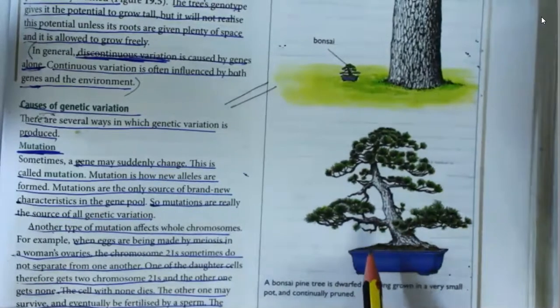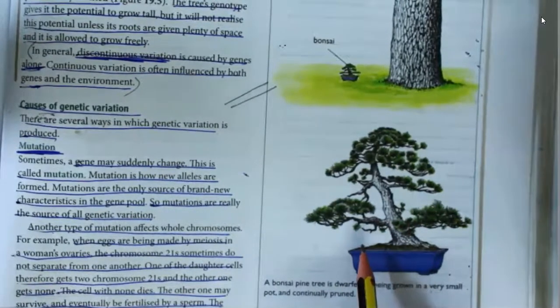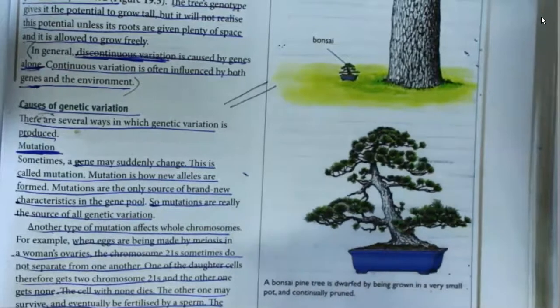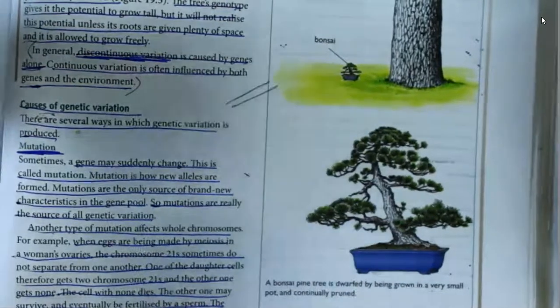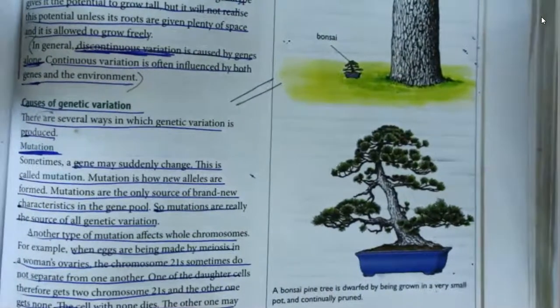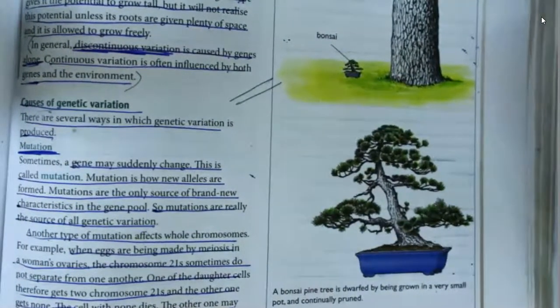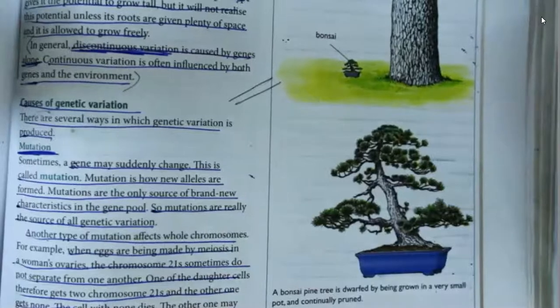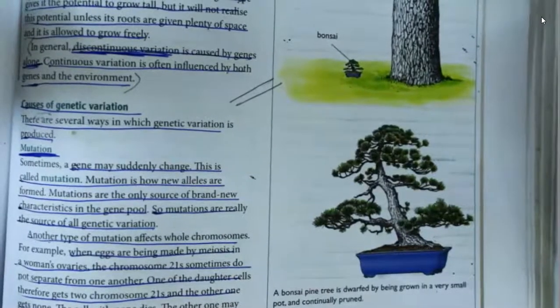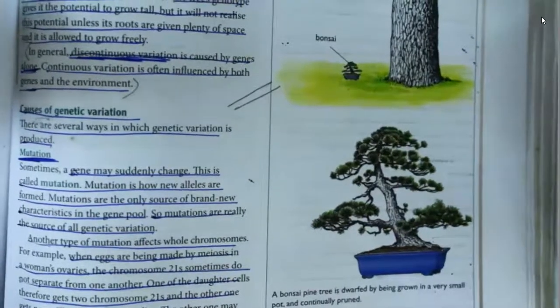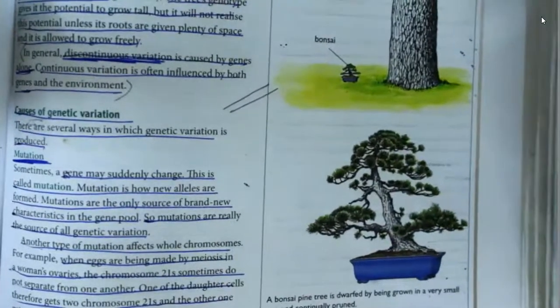So phenotype is observable characteristics resulting from the genotype's interaction with the environment. Genotype, on the other hand, refers to what genes a person has — what alleles are present for that gene.